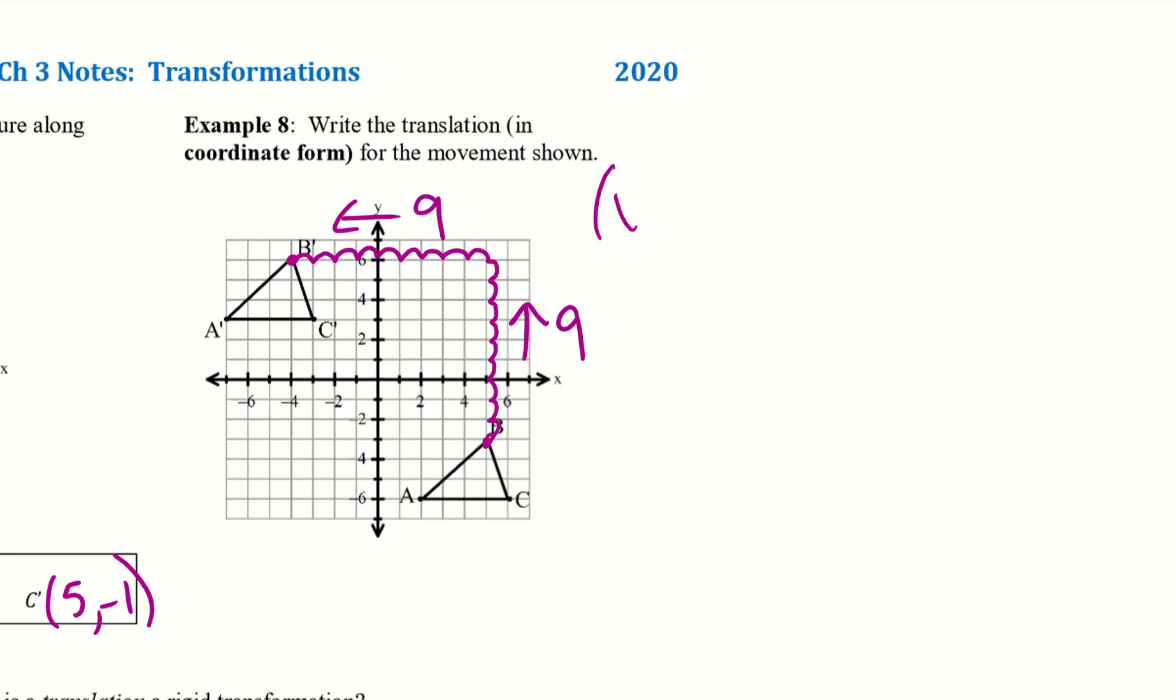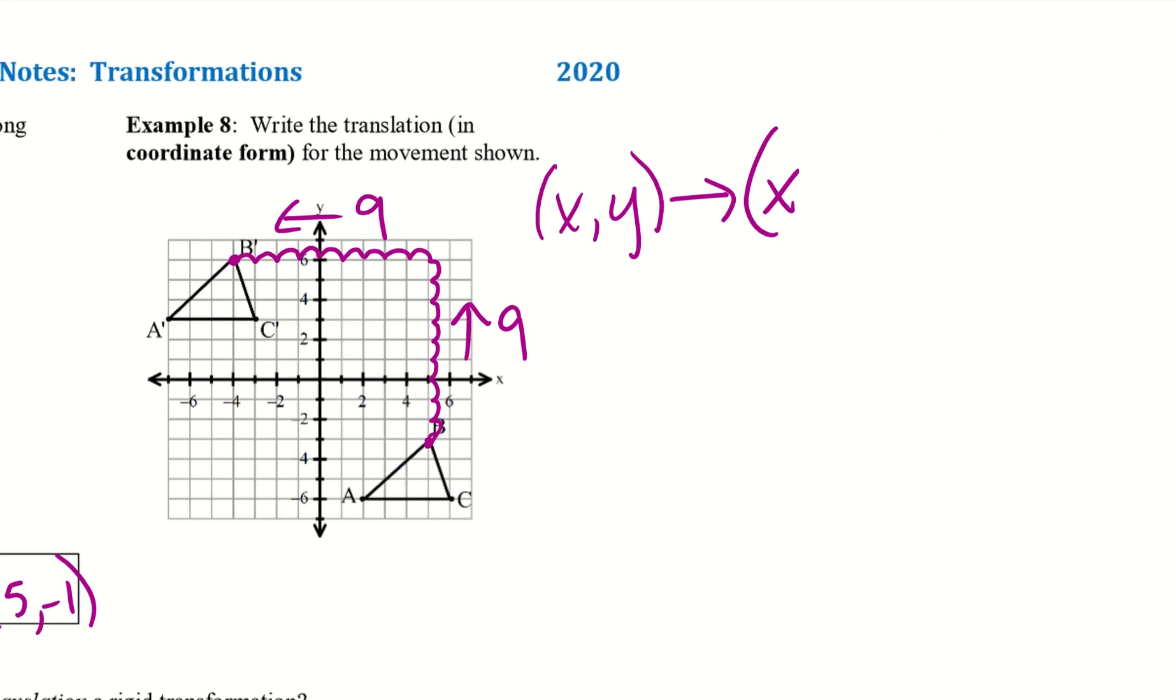So we always want to start with X, Y goes to X. And then we have to decide if it's addition or subtraction. So if we went left, it's subtraction. Right, it's positive. So I went left 9. So minus 9 for my X. And then Y, I have to decide if it goes up, it's positive. Down, it's negative. So positive 9. So I went left 9 and up 9. And so this would be my translation.